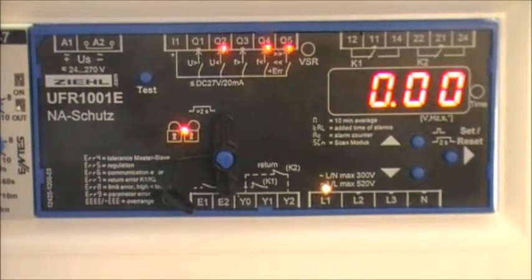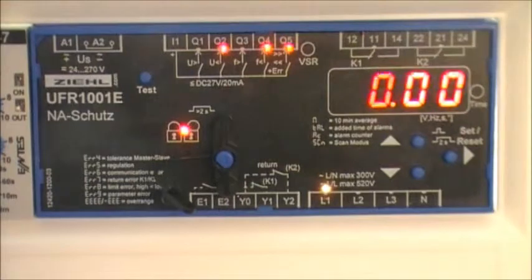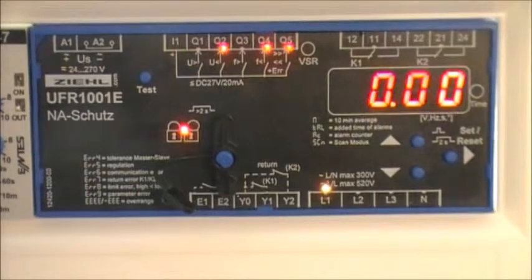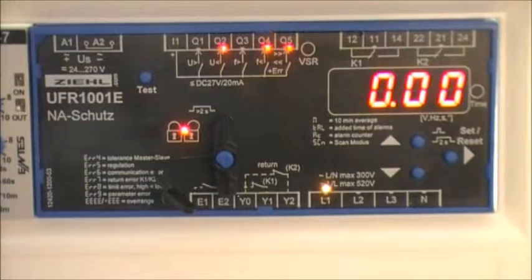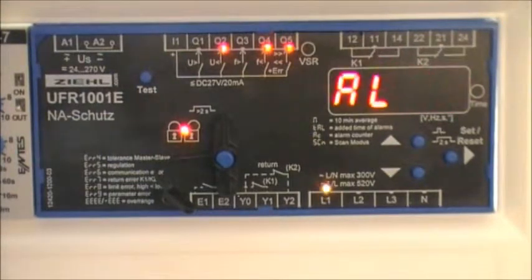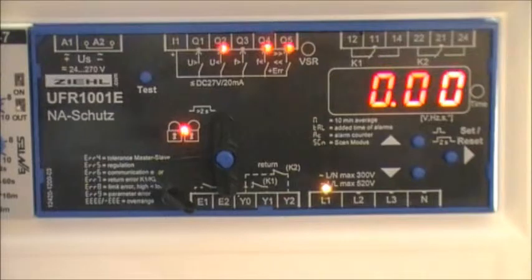The first one is the selection of the code. The codes that are pre-programmed in the unit for the UK market are 20, 21, 22, and 23. 20 being 3 phase 4 wire, 21 being 3 phase 3 wire, 22 and 23 being VT operation, 22 at 57.7 volts and 23 being 100 volts.